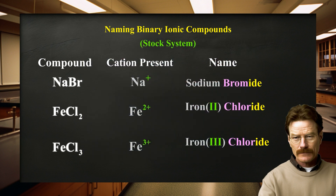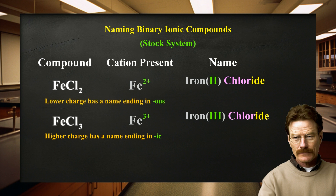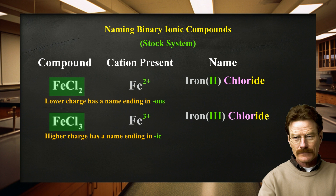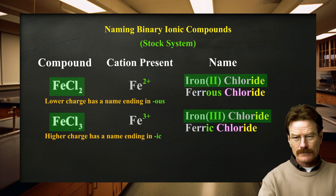Another system for naming these ionic compounds, seen in older literature, was used for metals that form only two ions. The ion with the higher charge has a name ending in -ic, and the ion with the lower charge has a name ending in -ous. These were added to the stem of the Latin name of the metal. For example, Fe3+ is called the ferric ion and Fe2+ is called the ferrous ion, giving FeCl3 and FeCl2 the names ferric chloride and ferrous chloride. We will only rarely use these older names; we will use the modern way with Roman numerals.